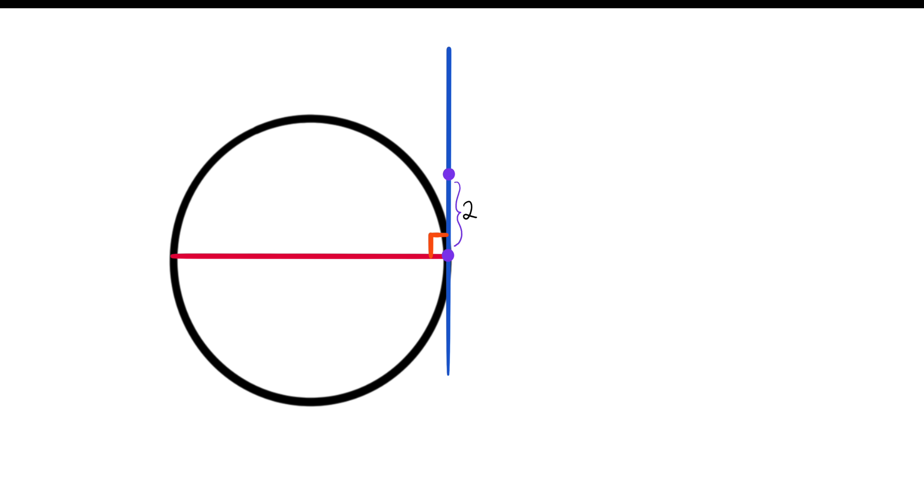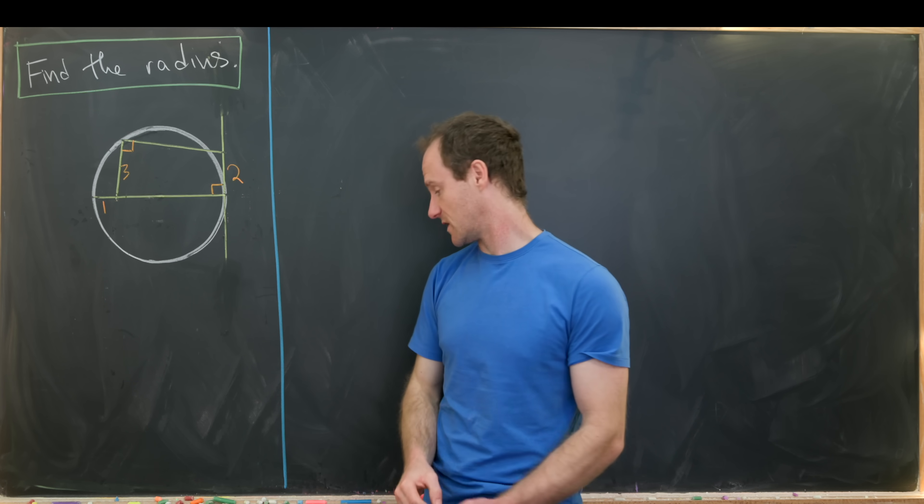Notice that means that this forms a right angle. And then furthermore, we'll mark two units up on that tangent line and then build a line segment from this tangent line back to the circle, giving us a length of three units down here and one unit down here and a right angle here. And then our goal is to find the radius of this circle.